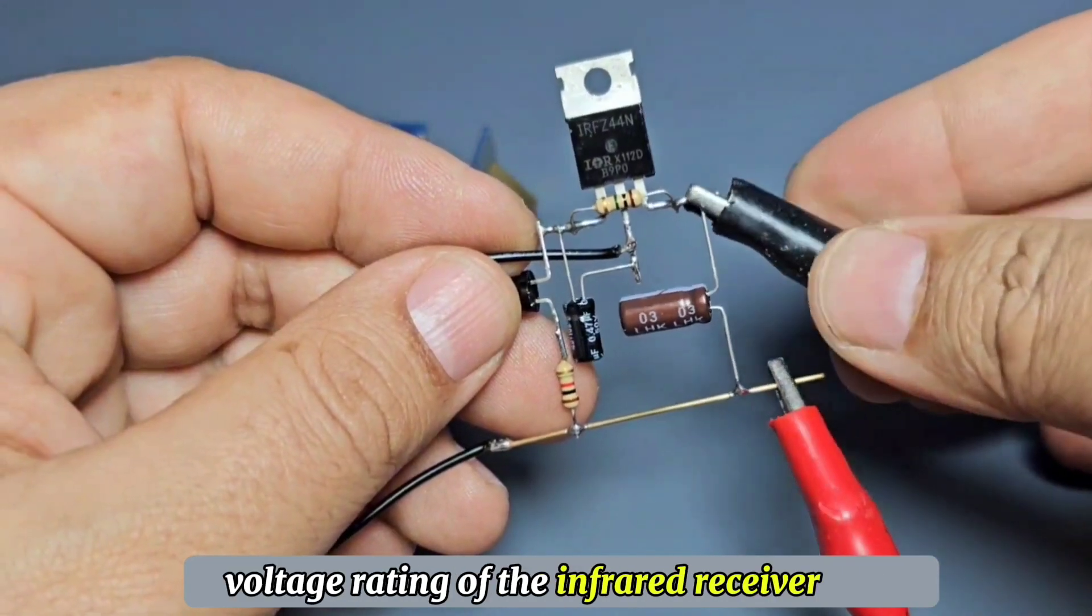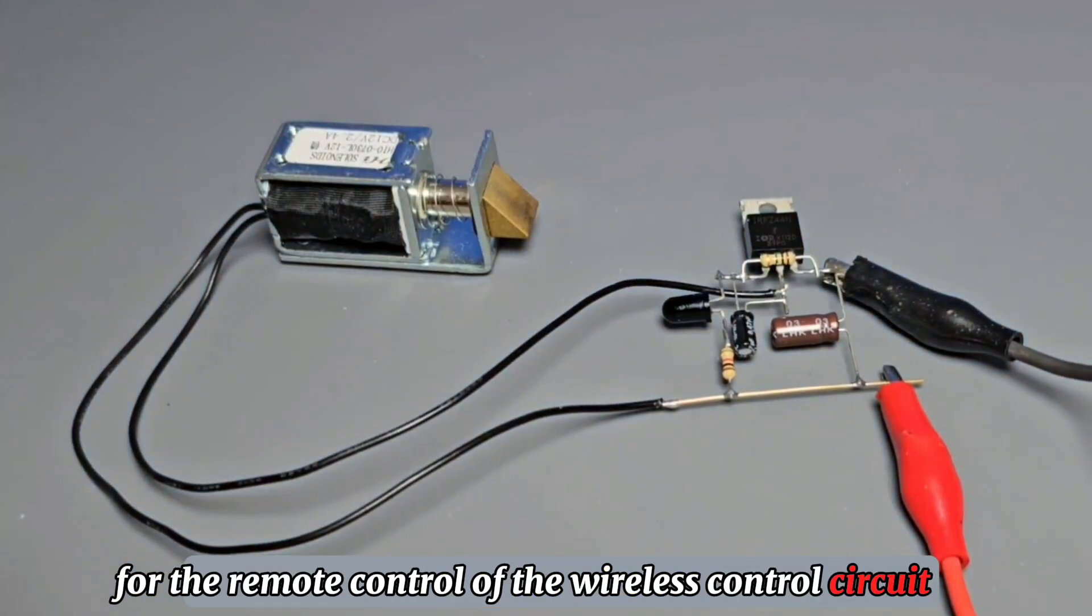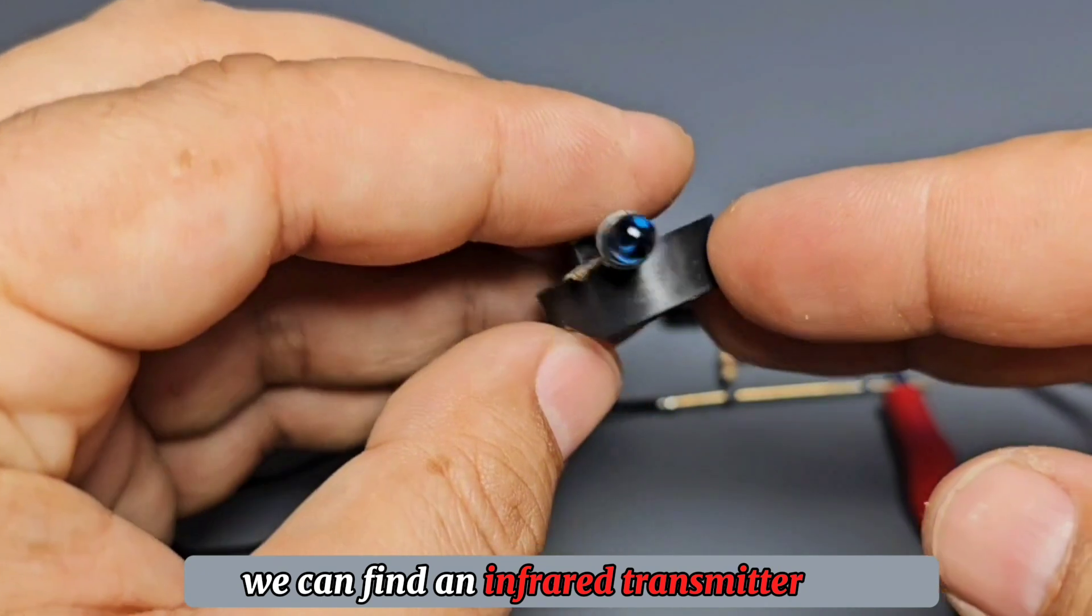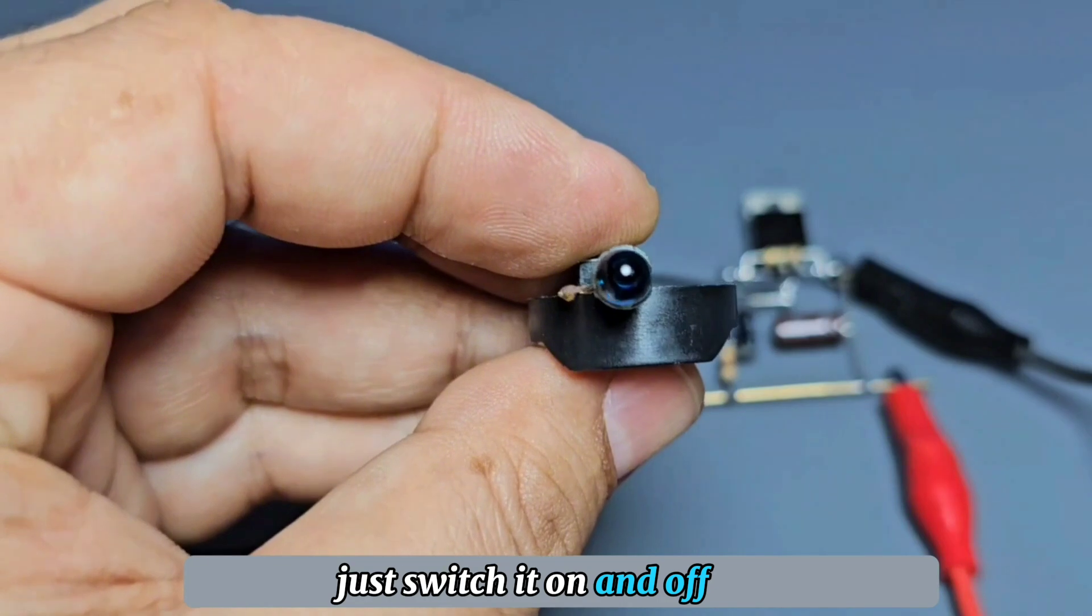For the remote control of the wireless control circuit, we can find an infrared transmitter and then add an aluminum button battery in series. Just switch it on and off.